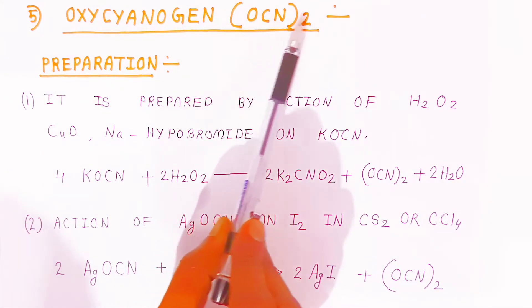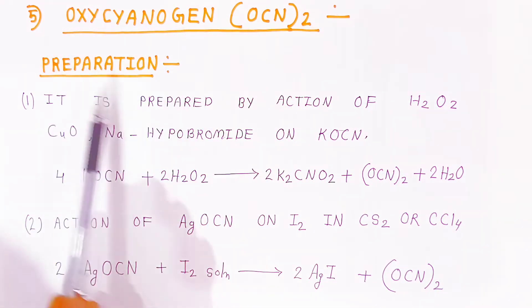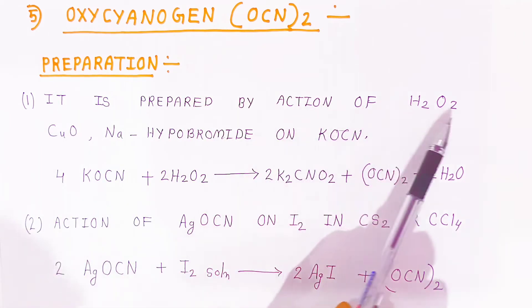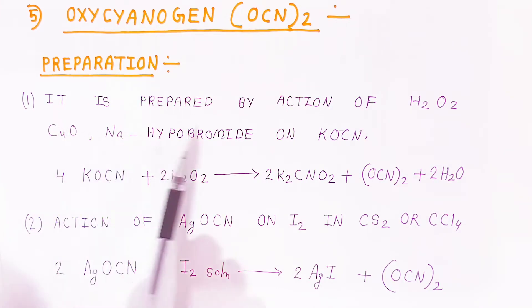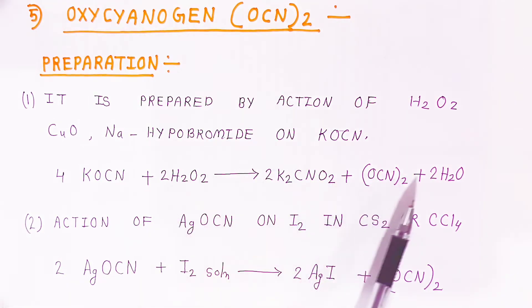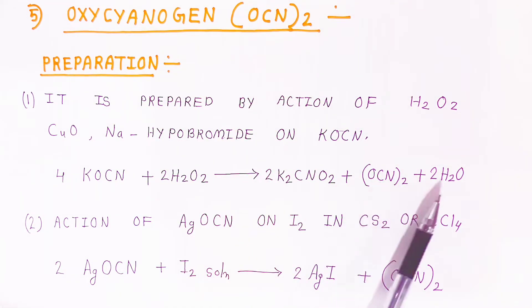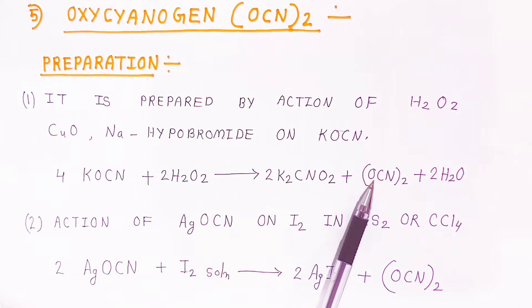We can write (OCN)₂. How are you going to prepare it? First preparation: it is prepared by action of H₂O₂, CuO, and sodium hypobromide on KOCN. When KOCN reacts with H₂O₂, it will give you the compound oxycyanogen along with water molecules. This way you can prepare oxycyanogen.